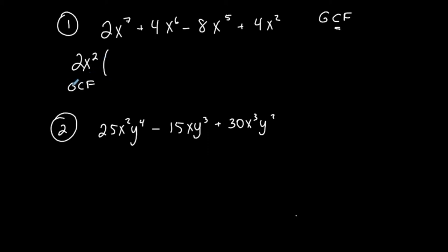Now I took it out — what's left? If you think about it, going backwards: what times 2x squared gives me 2x to the 7th? I took out the 2, and I took out 2 x's. I had 7 to start with, so I have 5 remaining — x to the 5th. Check: 2x squared times x to the 5th is 2x to the 7th, so that works. Plus: 2 times what is 4? That's 2 times 2. I took 2 x's out; I had 6, so I have 4 remaining. 2x squared times 2x to the 4th is 4x to the 6th.